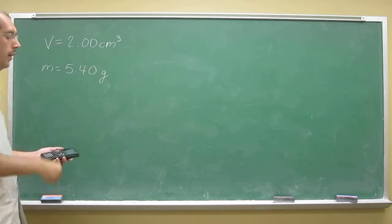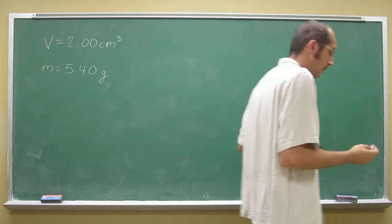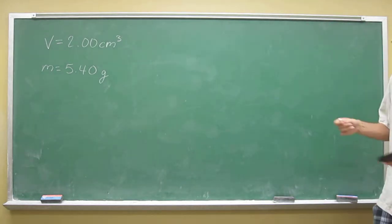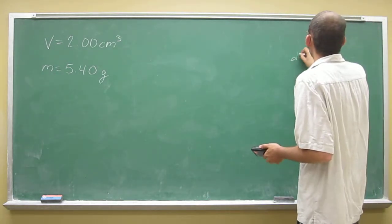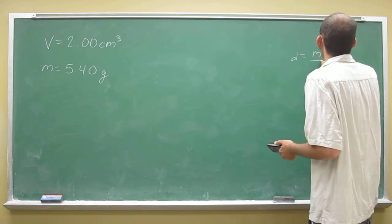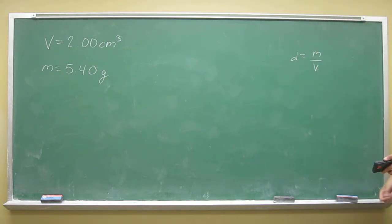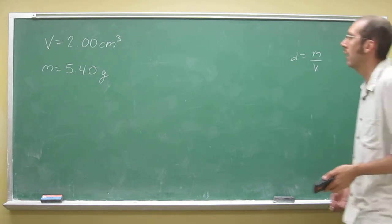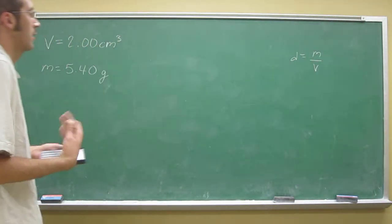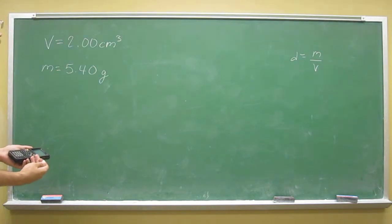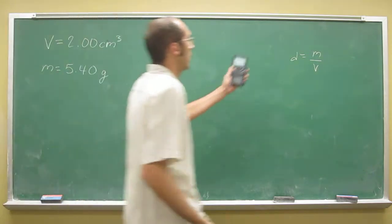I just taught you the density formula: density equals mass divided by volume. But the problem said to give the solution in units of grams per centimeter cubed. That should give you a clue as to how to set up this formula, even if you didn't know it.